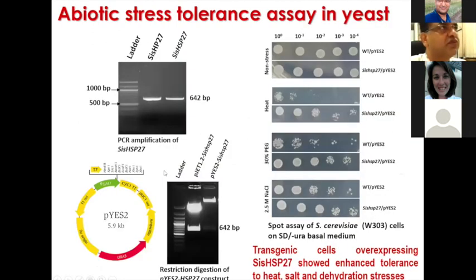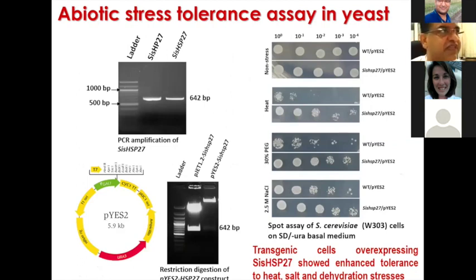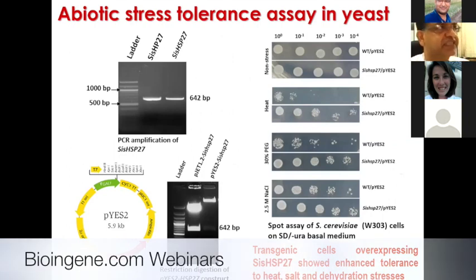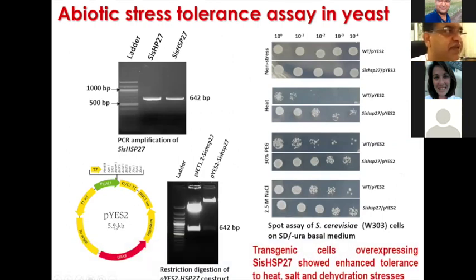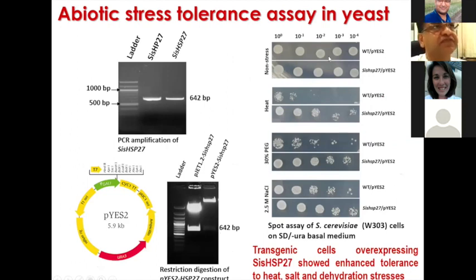To check biotic stress tolerance, we used the yeast system to confirm whether this gene is working or not. We cloned this gene into the vector pEBA-ES2, confirmed by restriction digestion. It is a 642 base pair insert, and then we overexpressed this gene in yeast.